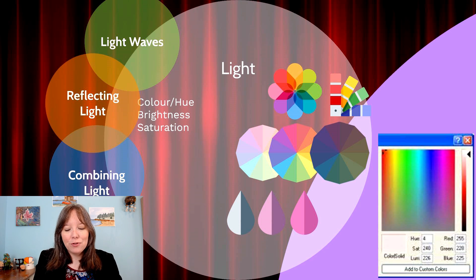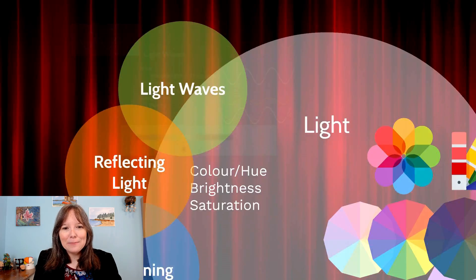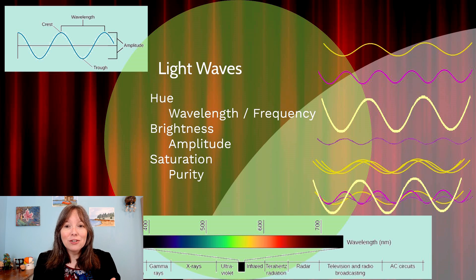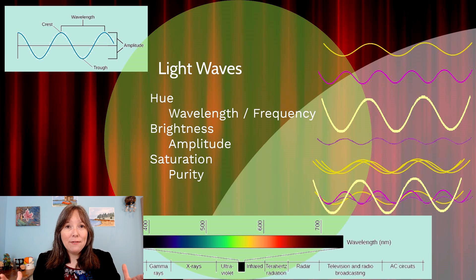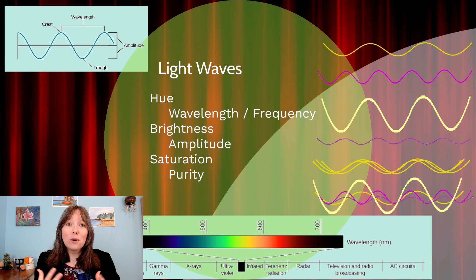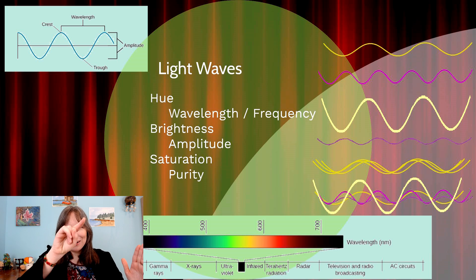Now we're going to talk about light waves. Light — whether it moves as a particle or as a wave — we're interested in discussing it as a wave for this course. When we talk about hue, brightness, and saturation, it's really different physical components of these light waves that we are detecting. Hue, whether it's blue or red or yellow, comes into play when we measure the wavelength of light. Every wave goes up to a crest, then down to a trough, and repeats. How quickly this repeats determines its frequency or wavelength.